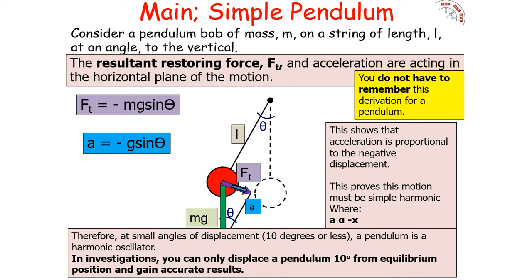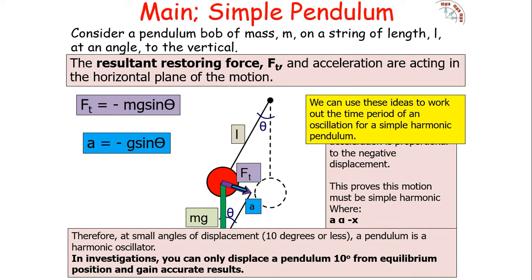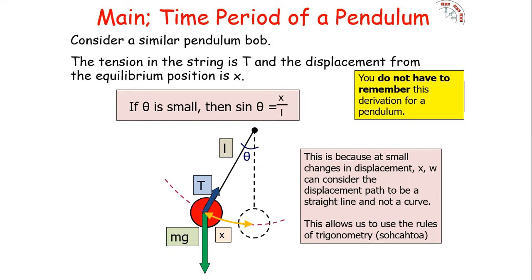In investigations, you can only displace a pendulum 10 degrees from the equilibrium position for accurate results. If displaced more than 10 degrees, the small angle approximation no longer holds. We can use these ideas to work out the time period of oscillation for a simple pendulum. When theta is small, sine theta equals x divided by L, because we assume a right-angle triangle — the small displacement path is treated as a straight line rather than a curve, using trigonometry (SOH CAH TOA) to write an expression for sine theta.